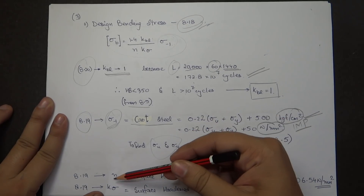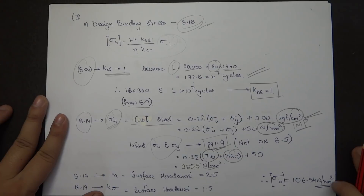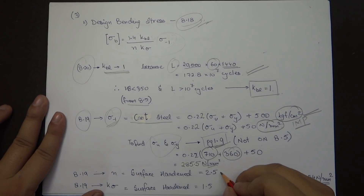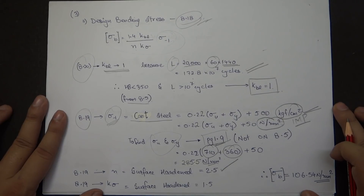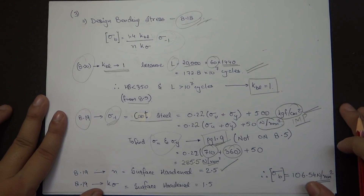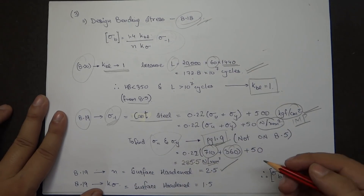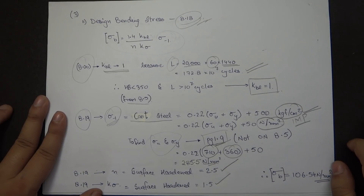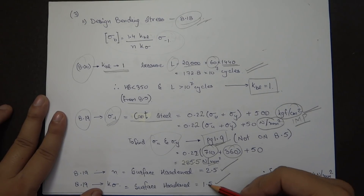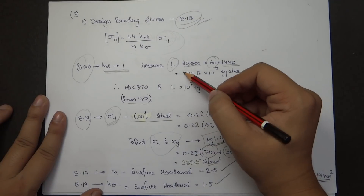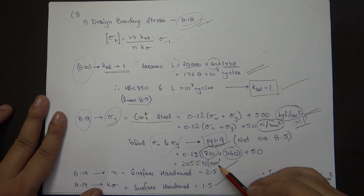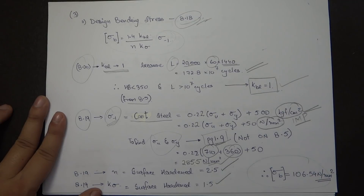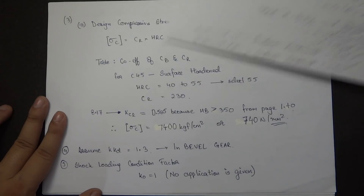Page 8.19 also gives the factor of safety N. Since the material is surface hardened, N is 2.5, and K_sigma from the last table on the same page is 1.5 for surface hardened material. Plugging in all values, the design bending stress comes out to be 106.54 Newton per mm square.